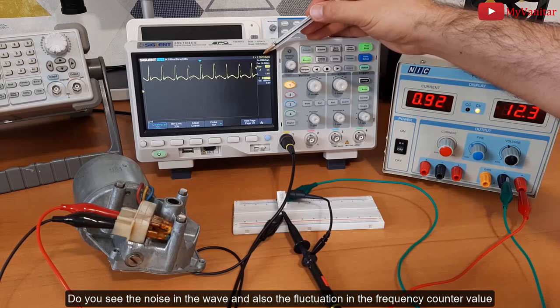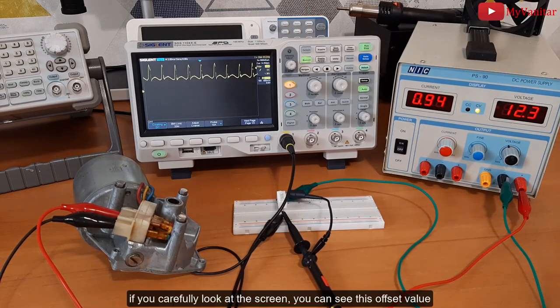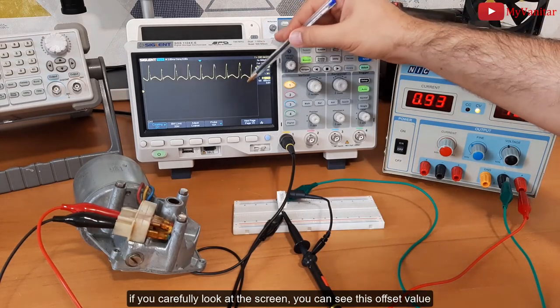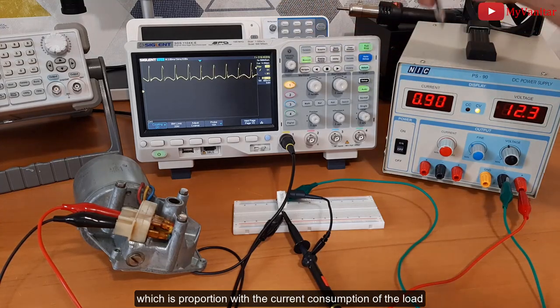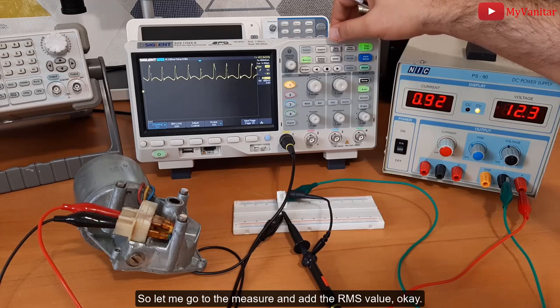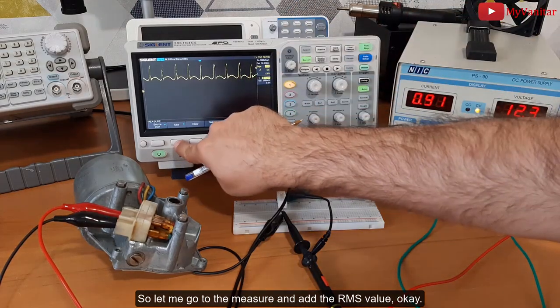fluctuation in the frequency counter value. If you carefully look at the screen, you can see this offset value which is in proportion with the current consumption of the load. So let me go to the measure and add the